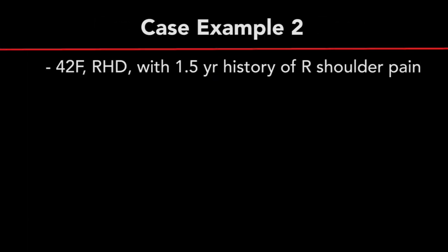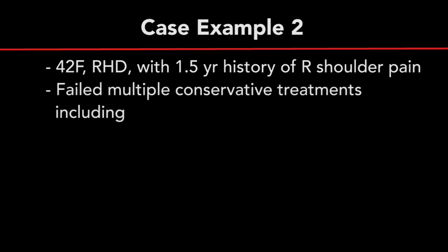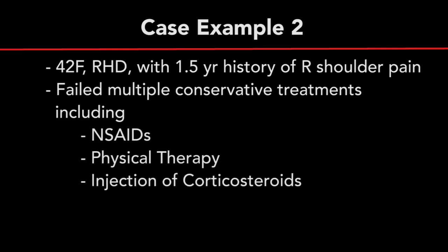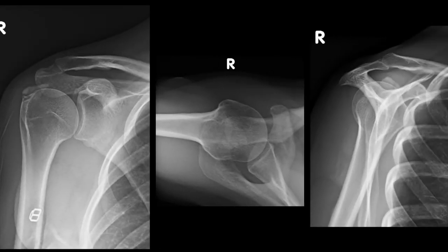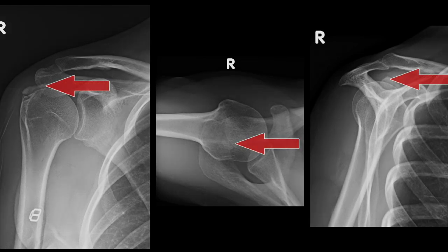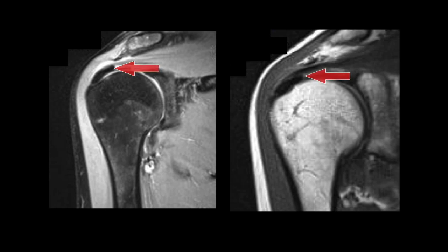Case 2 is a 42-year-old right-hand dominant healthy active female who presents with a one-and-a-half-year history of insidious onset right shoulder pain, worse with overhead activities and lifting weights. The patient had tried and failed multiple non-operative treatment modalities, including activity modification, anti-inflammatories, and steroid injections over the past year. Radiographic views demonstrate large calcific deposits in the rotator cuff just proximal to the greater tuberosity with no other bony abnormalities. MRI delineates the calcium deposits in the supraspinatus tendon involving approximately 90% of the supraspinatus tendon thickness, just proximal to its insertion on the greater tuberosity.